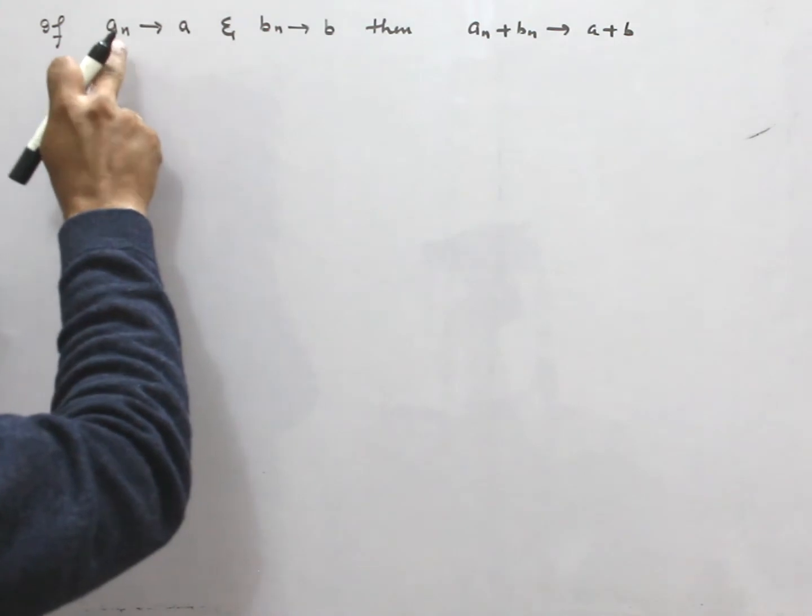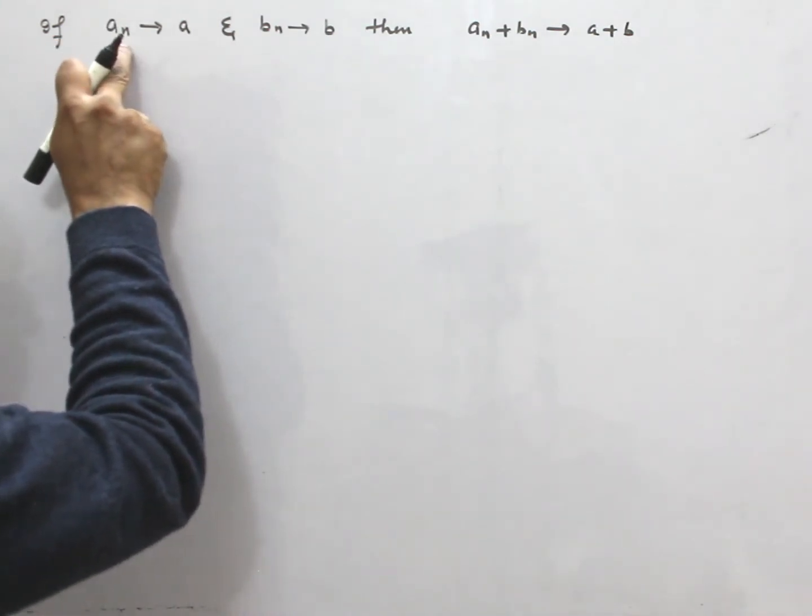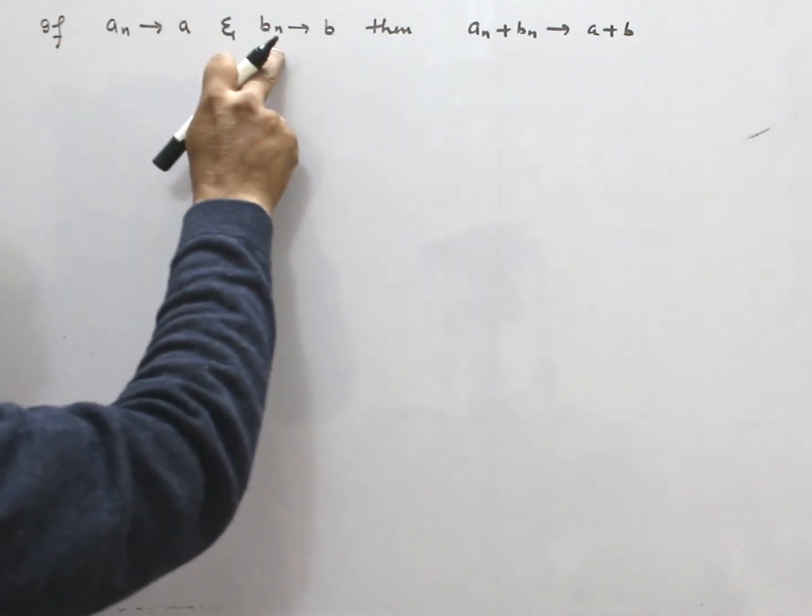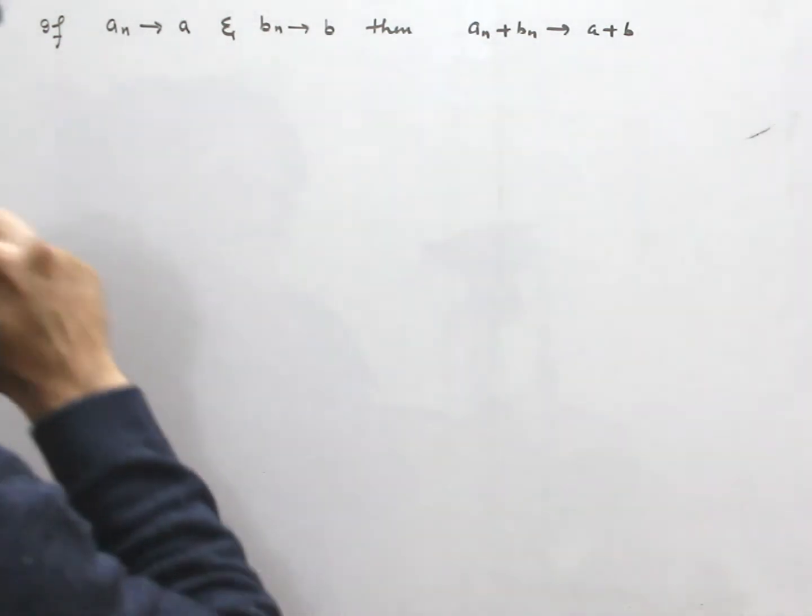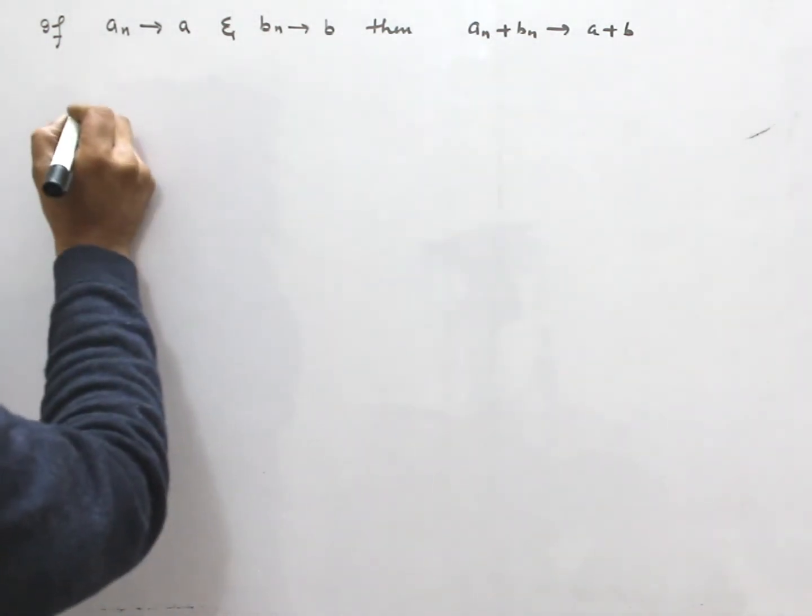Now, what we have given? We have given An is convergent, Bn is convergent, then we have to show this is convergent.